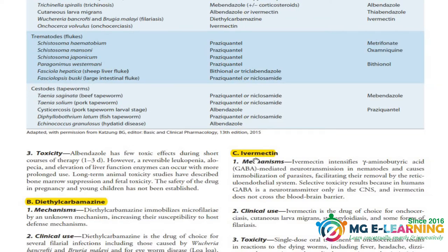The second important drug is Ivermectin. The mechanism of action of this drug is important, and MCQs and SCQs can come from it. So you need to know the mechanism of action of Ivermectin and its clinical uses and toxicity.